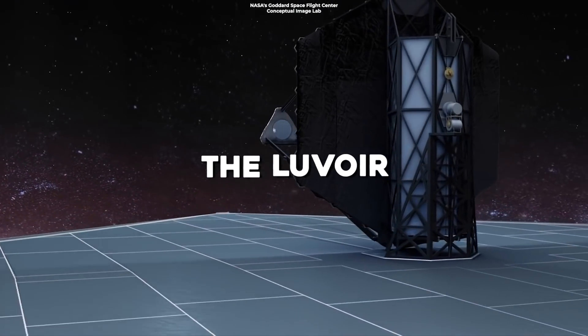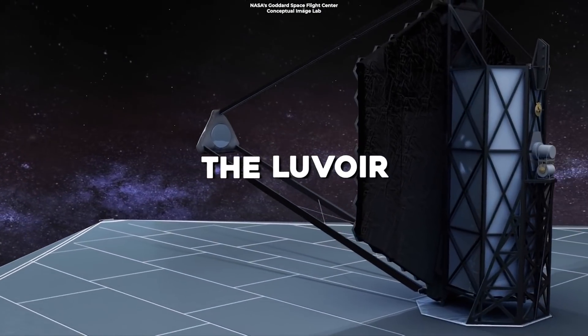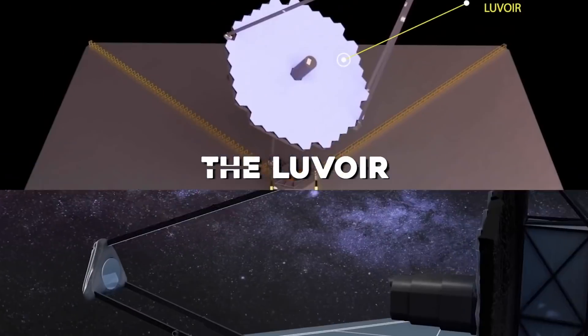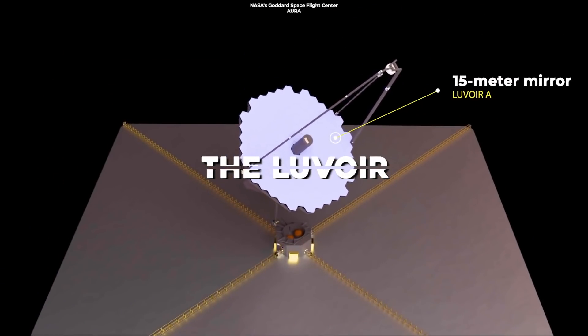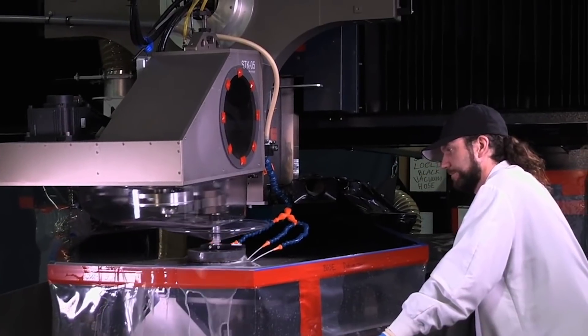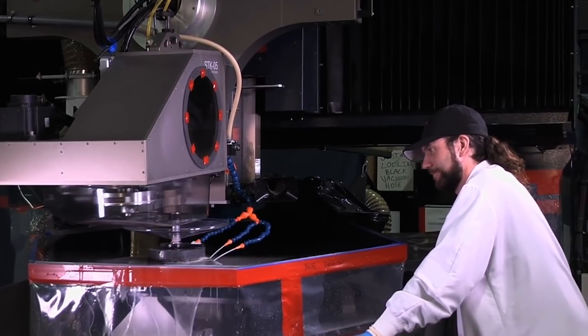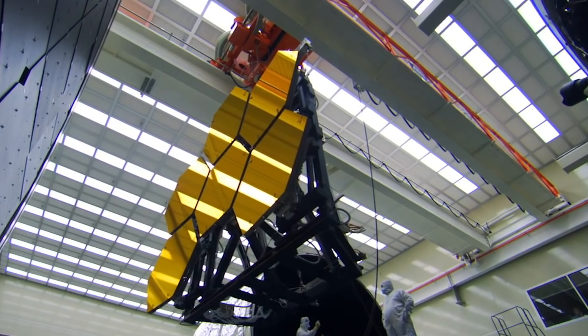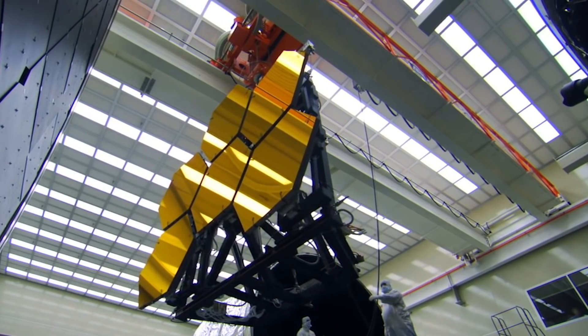The LUVOIR is even bigger. Its concept study aims for a huge telescope mirror with a diameter of 15 meters, almost 50 feet. That's six times the size of the Hubble Space Telescope's mirror, and more than twice the size of Webb's 6.5-meter telescope.